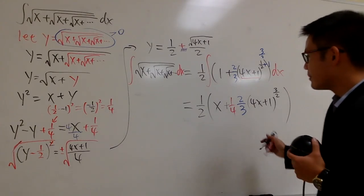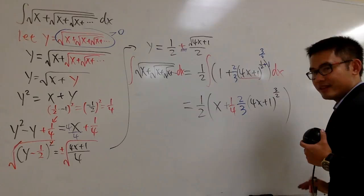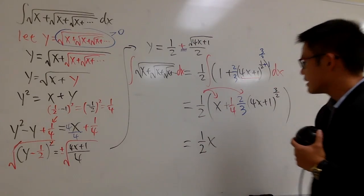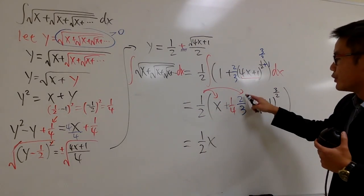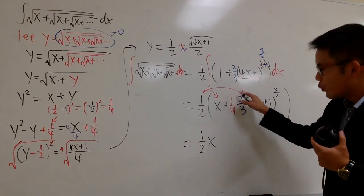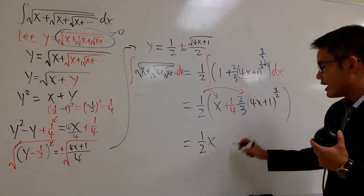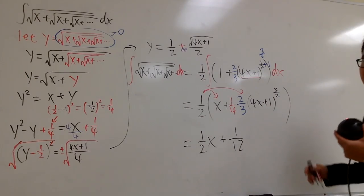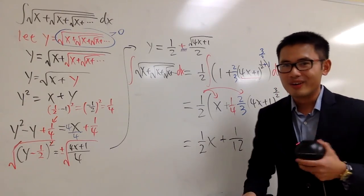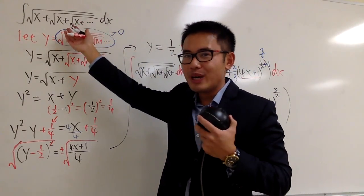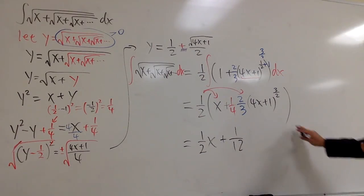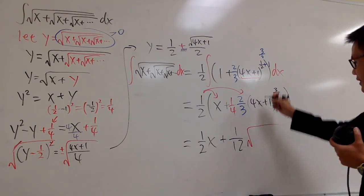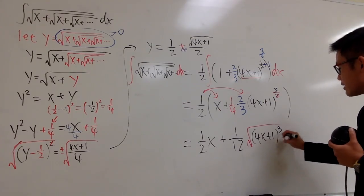To finish things up nicely, I'll put plus C at the end. Distributing the one half: one half times x gives one half x. One half times two over three times one over four — the two cancels — gives one over twelve. Since we originally had radicals, let's write the three halves power as a radical: square root of four x plus one to the third power. So the final answer is one half x plus one over twelve times the square root of four x plus one cubed, plus C.